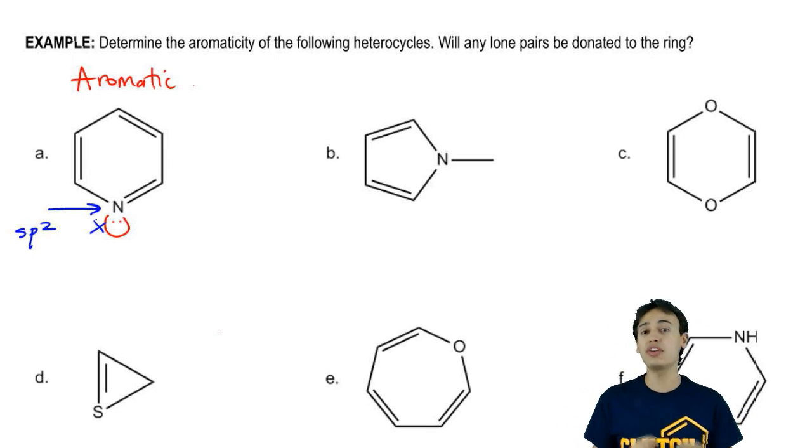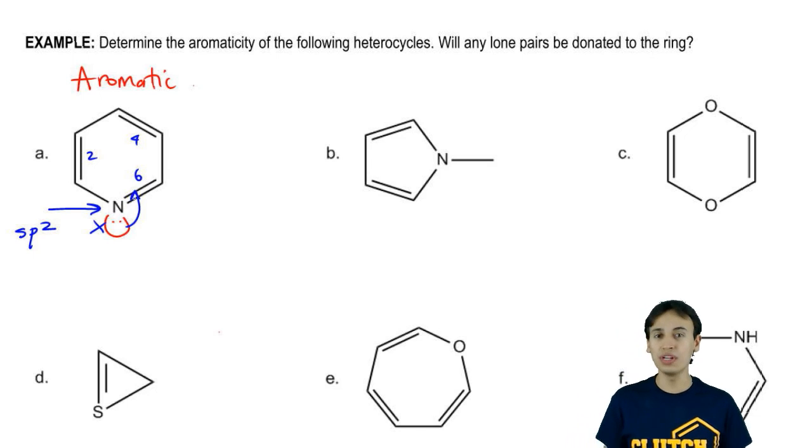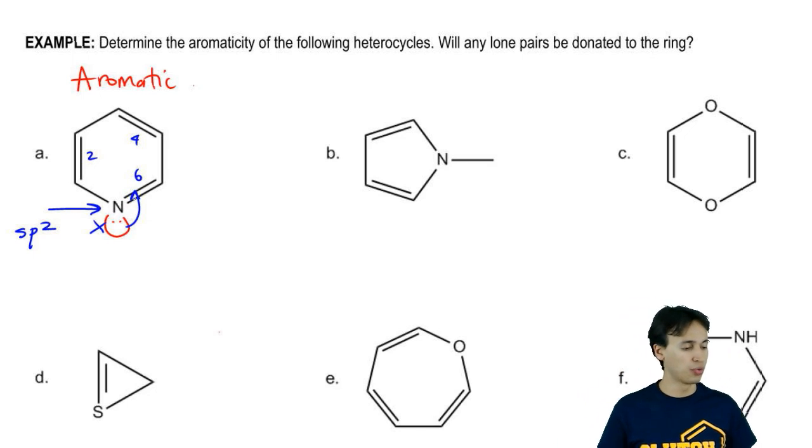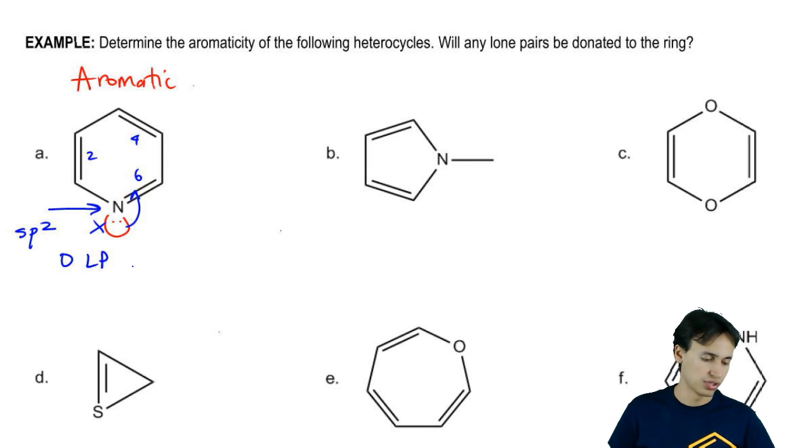Second of all, even if it was sp3 and it donated, how many pi electrons would you then have? We already have two, four, six. If I were to donate these electrons to the ring, I would get eight. For two reasons, that lone pair is just going to sit there and it's going to be highly accessible. It's not going to be involved with the ring at all. The answer was this would have zero lone pairs donated.